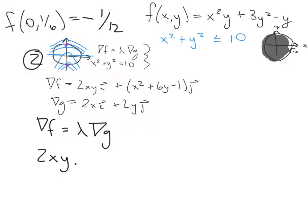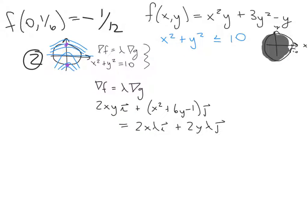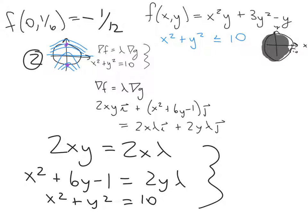Setting ∇f = λ∇g, we have 2xy·i + (x² + 6y − 1)·j = 2xλ·i + 2yλ·j. Matching components gives us: 2xy = 2xλ, x² + 6y − 1 = 2yλ, and the constraint x² + y² = 10. This is the system of three equations we need to solve.